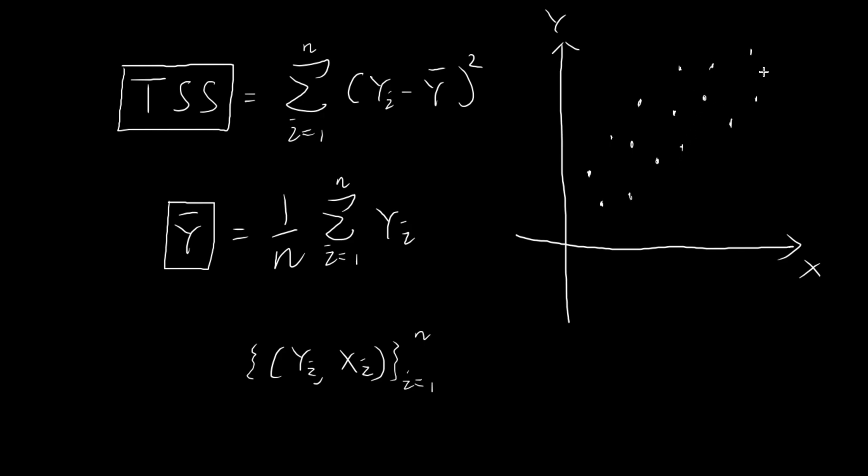And then taking these data points, we can take all their y values, add them up, and divide them by n. And then you get this value, the sample mean of y, which we can mark down on our y-axis. And then we can extend a horizontal line from this value of the sample mean of y.